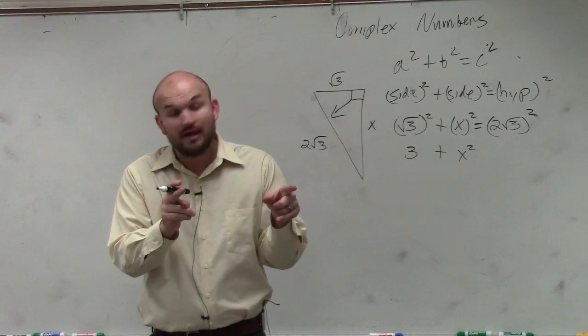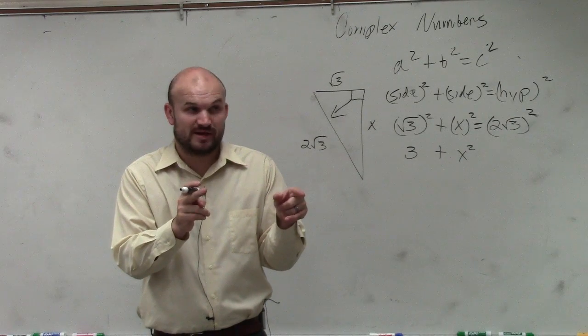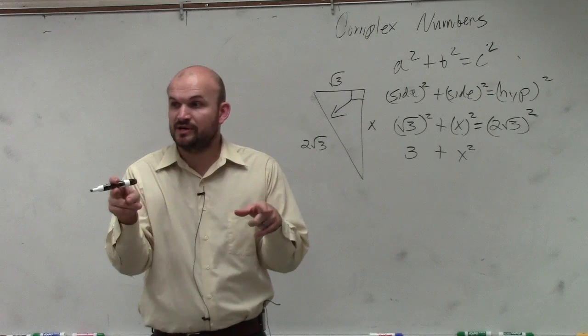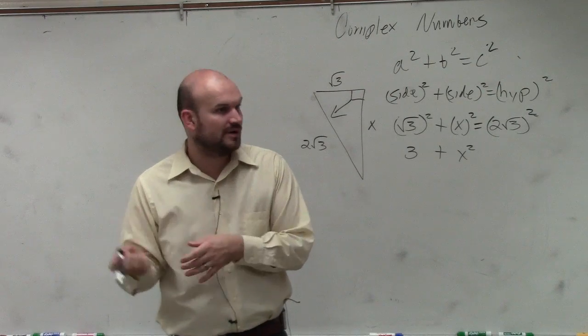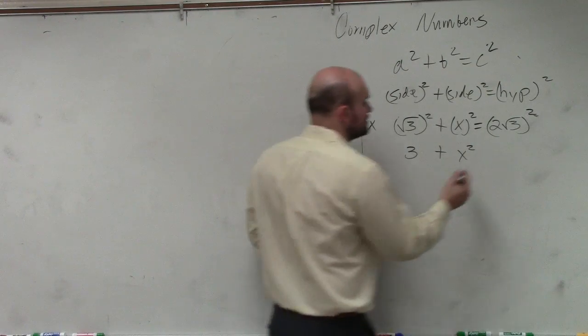And then we already practiced with multiplying radicals. Square root of 3 times square root of 3 is going to be square root of 9, which is 3. So 3 times 4 equals 12.